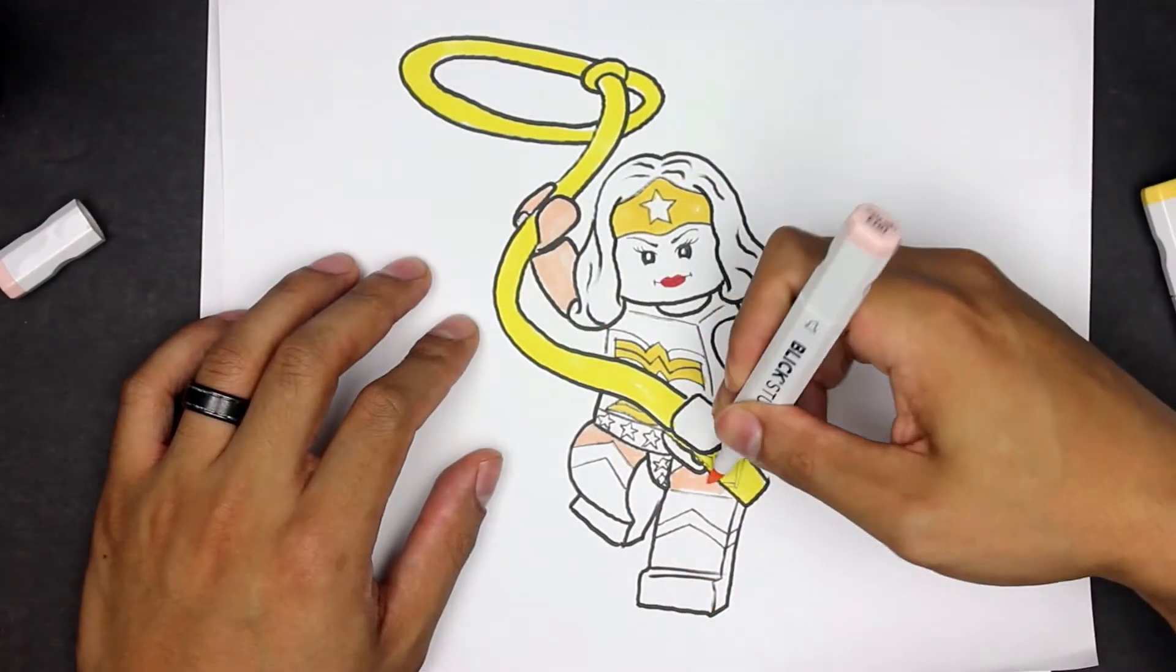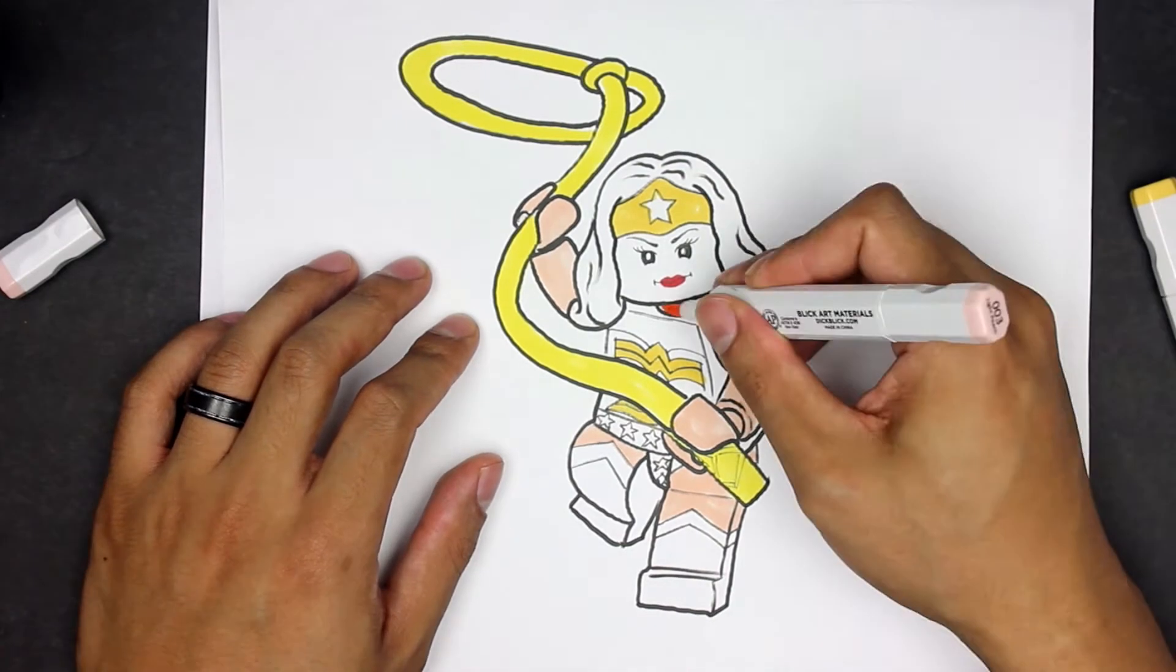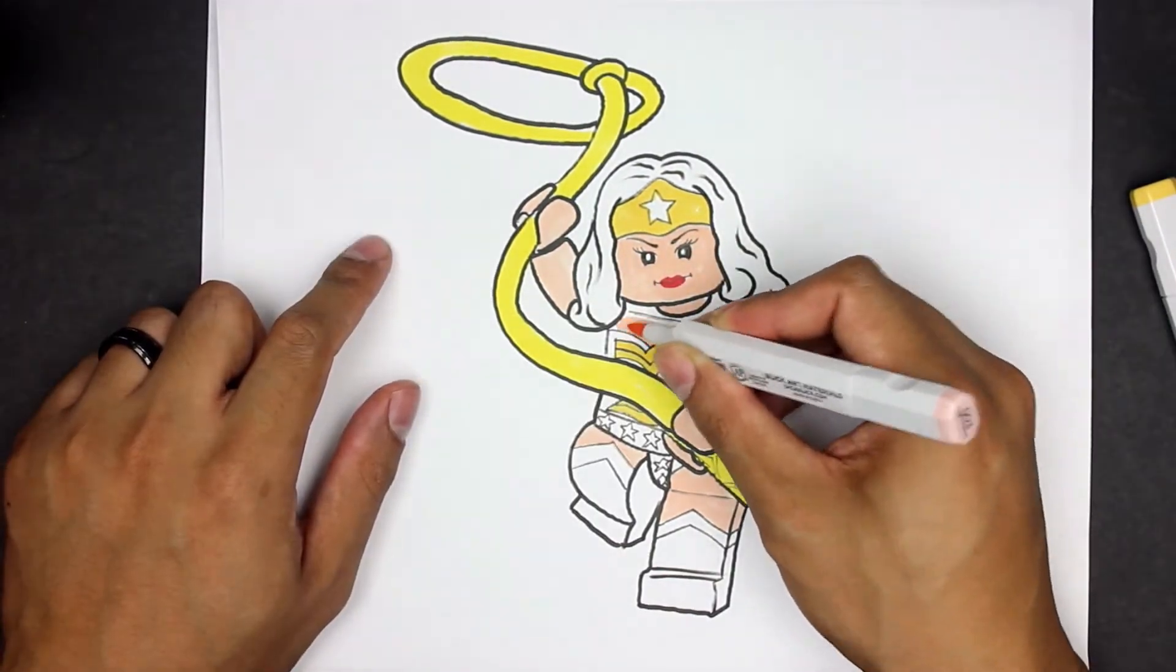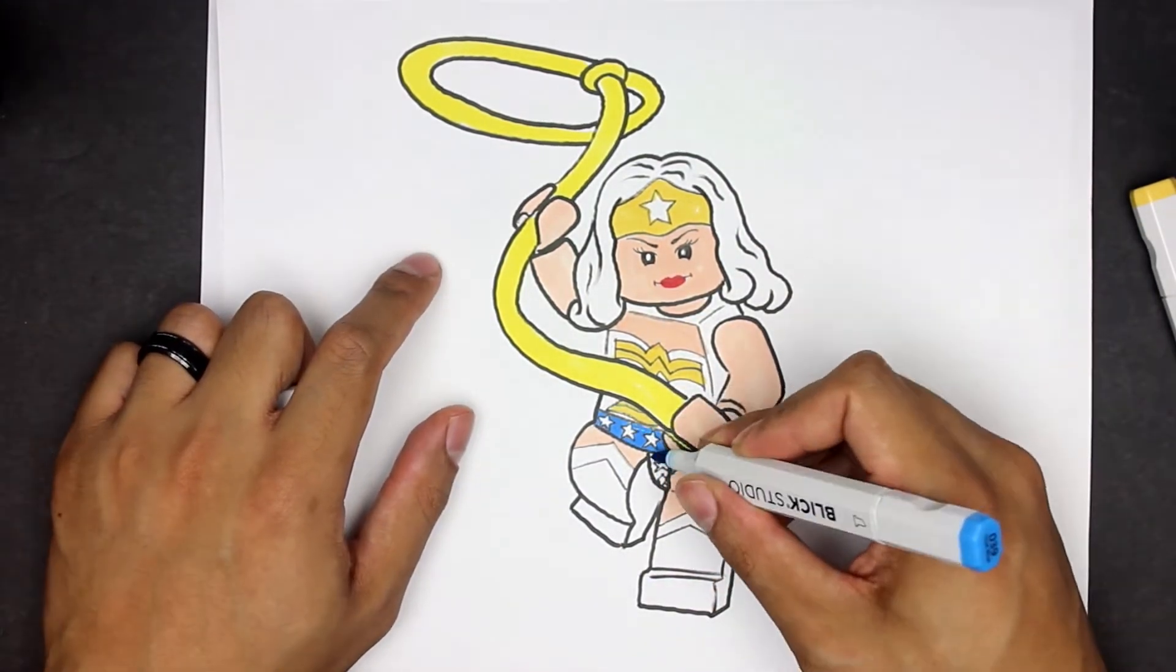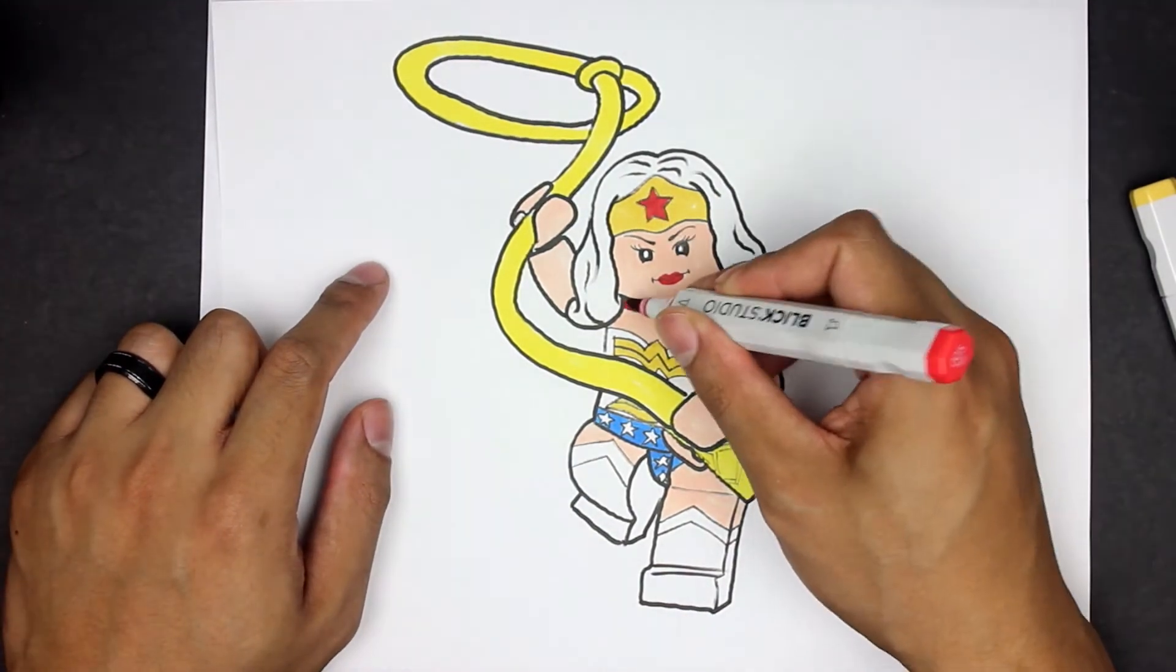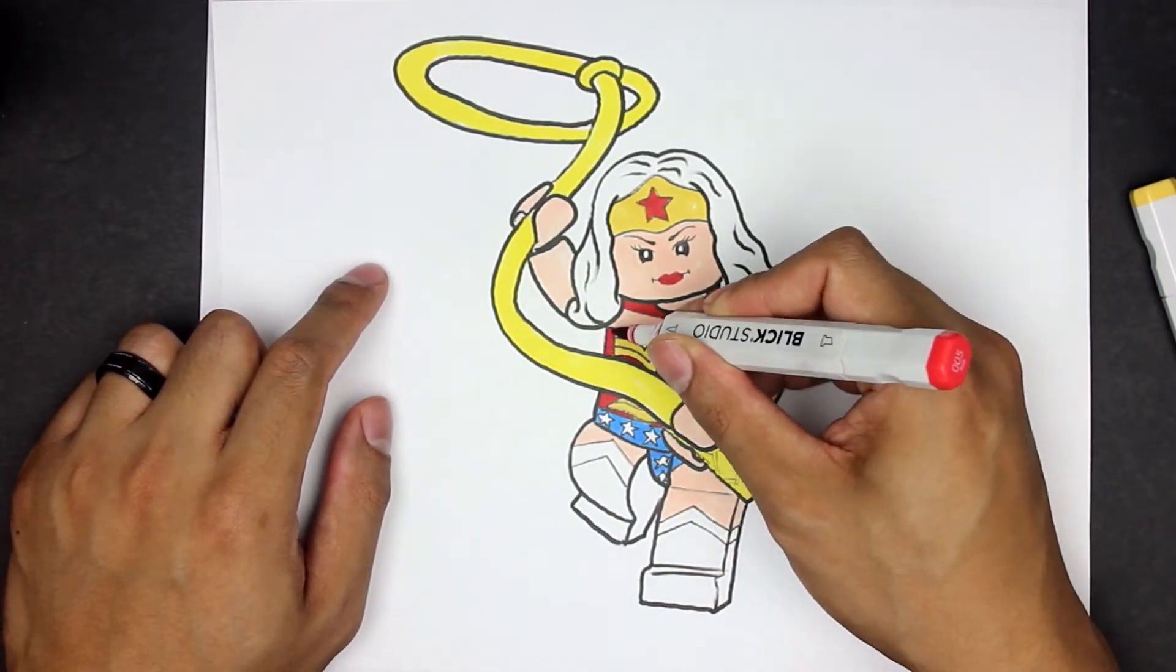Followed by skin tone. I don't think I'm going to add shadows on this one, just to see how it looks. I'm going to add some blues. There's not much. Followed by a lot of red, such as on the top of her star, her forehead, and then of course the outfit itself and the boots.